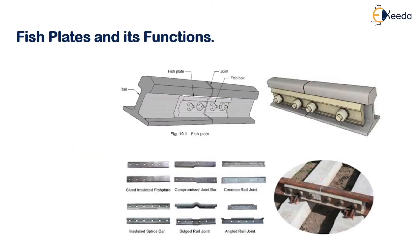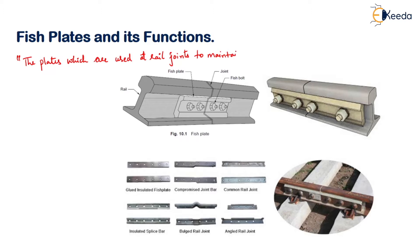If you see in the diagram, these are your fish plates. To connect two rails, you need a fixture known as fish plates. The plates which are used to connect rail joints to maintain the continuity of the rails in the track are known as fish plates.